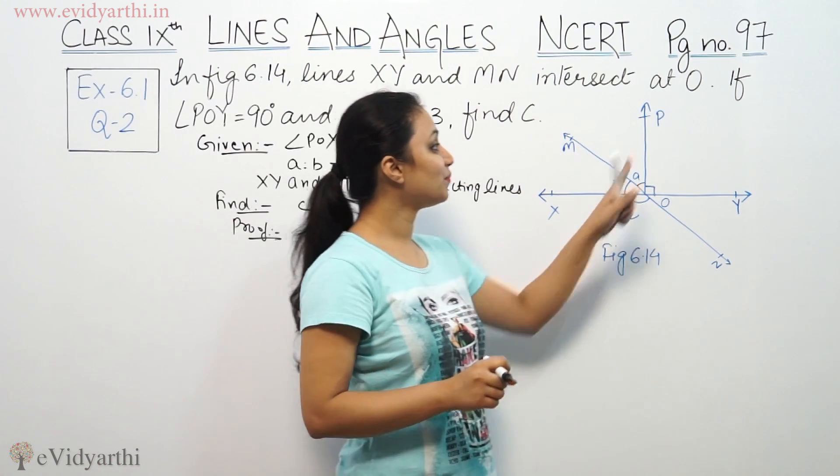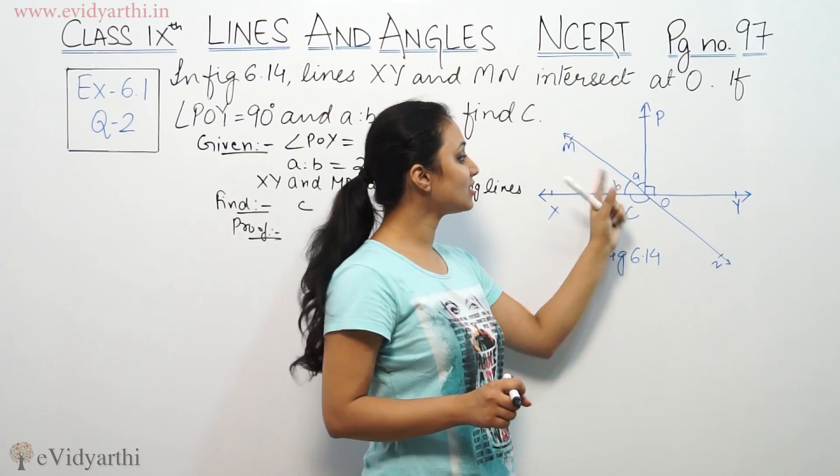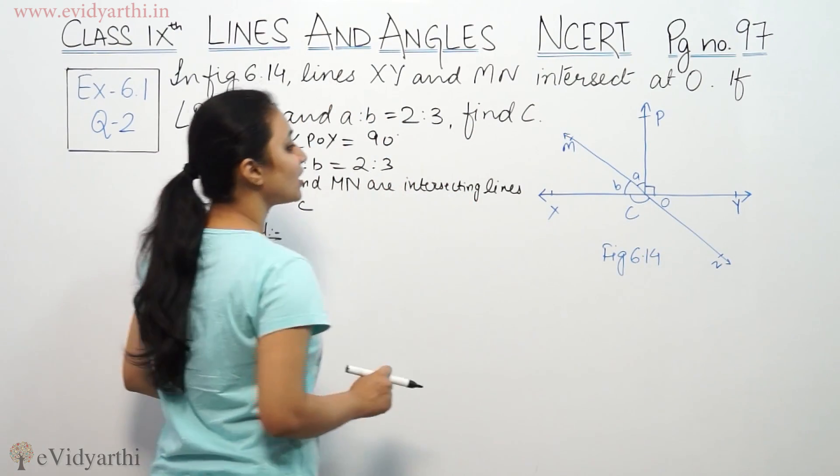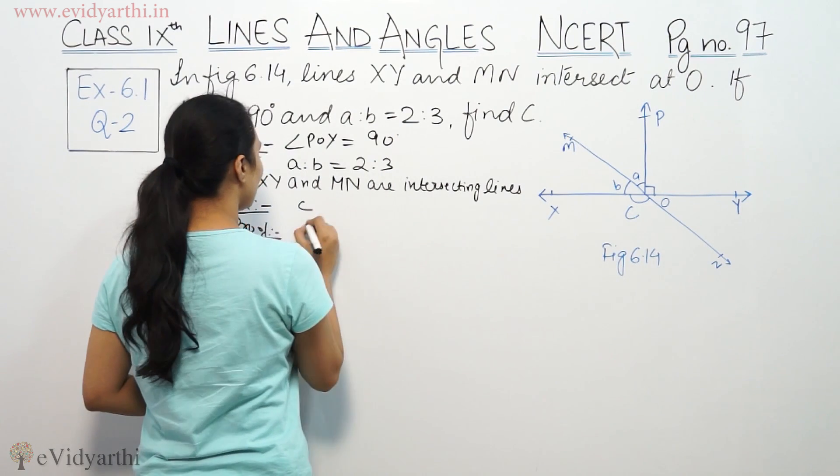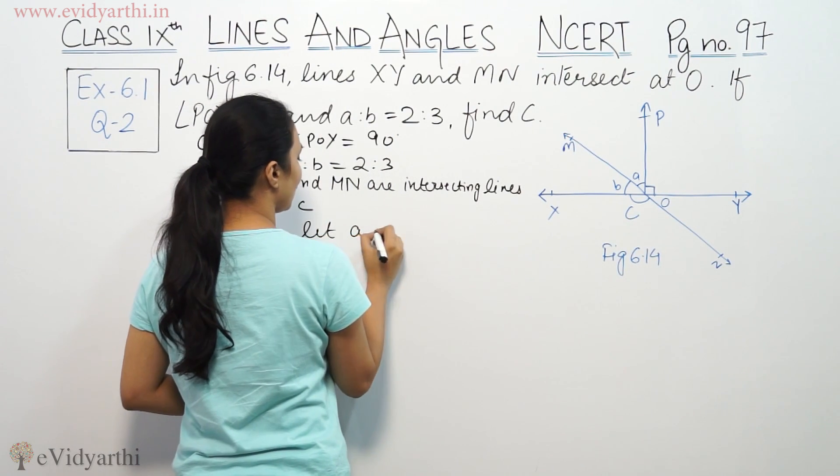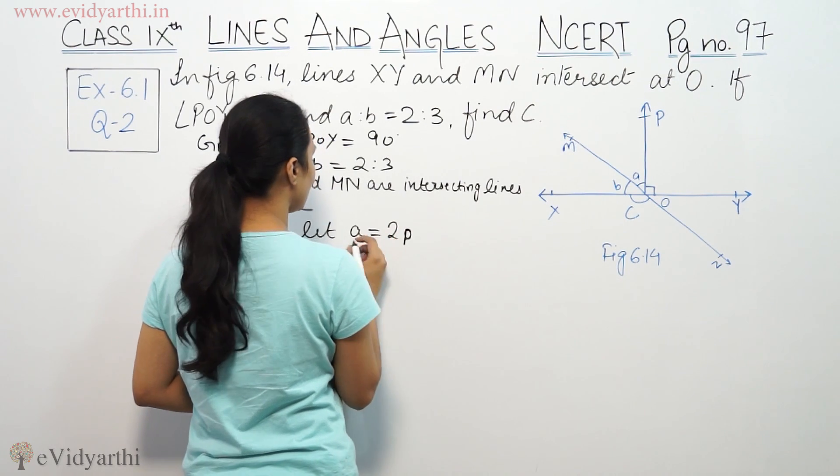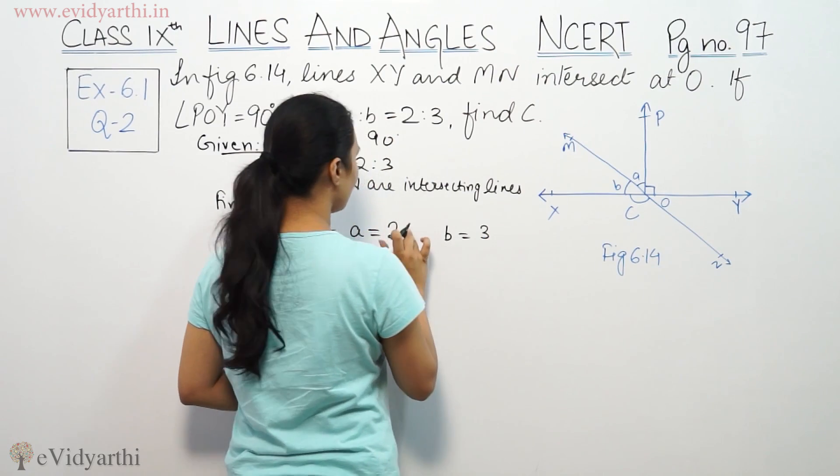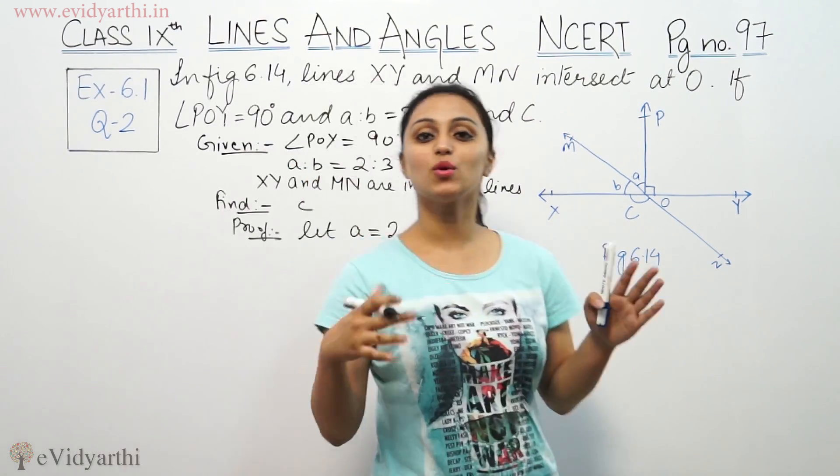We know that POX is part of a straight line with angle 90 degrees. Let a equal 2d and b equal 3d, where we use variable d for any letter instead of using the given angles directly.